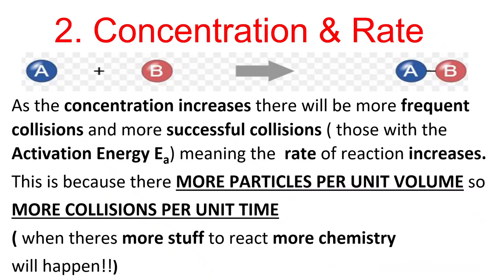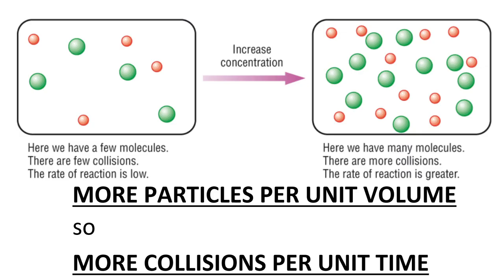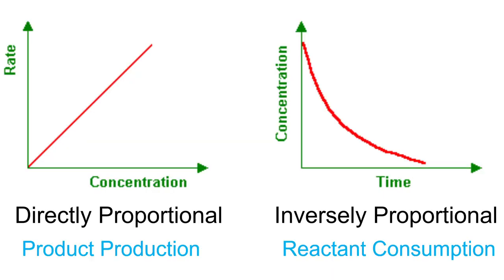Next is concentration and rate. As the concentration increases, there will be more frequent collisions, more successful collisions, and the rate increases. The key phrase here is: because there are more particles per unit volume, there will be more collisions per unit time. That's straight off the mark scheme — it's what you must say. It would be directly proportional if you keep increasing the concentration. You will get an inversely proportional graph if you are measuring reactant consumption instead of product production.